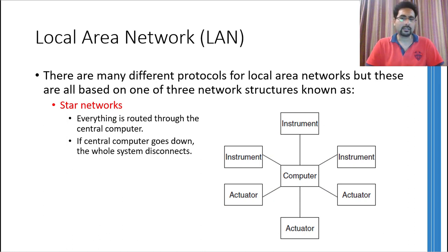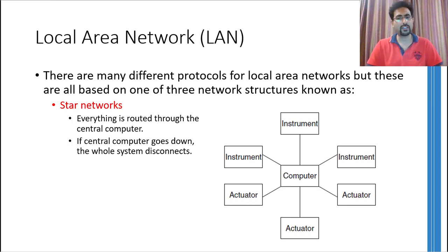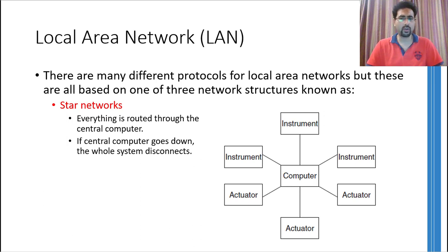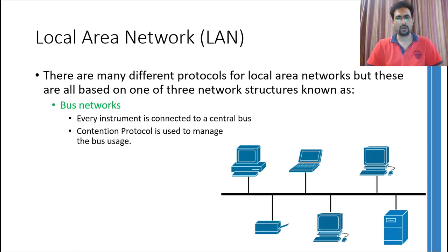The star network got its name from the shape it has. In this kind of network, there is a central processor or network administrator to which all devices are connected. Therefore, if any two devices have to communicate, the information has to flow through the central processor. The advantage is that you have complete control over the data flowing in the network from a central location. The downside is that if the central computer goes down, everything goes down. Normally in organizations, internet is provided using this kind of network.